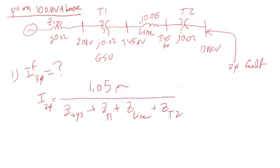So 1.05 per unit divided by Z_system, which is j0.02, plus j0.02, plus j0.015. I ran out of space so I'm just gonna come back here. Plus Z_line is zero—okay, so I already wrote the impedance of the line.